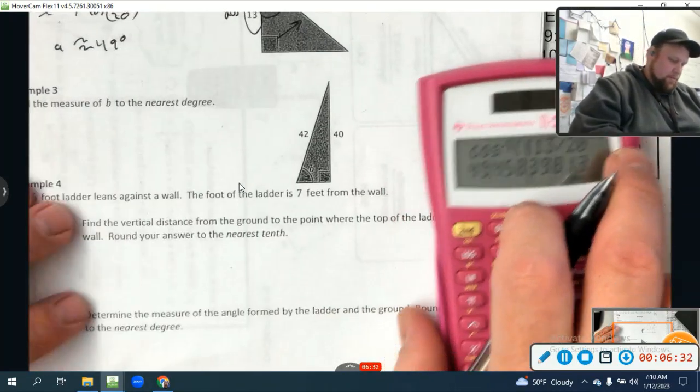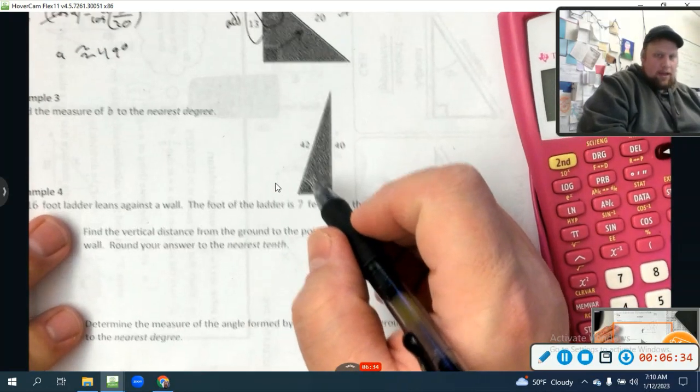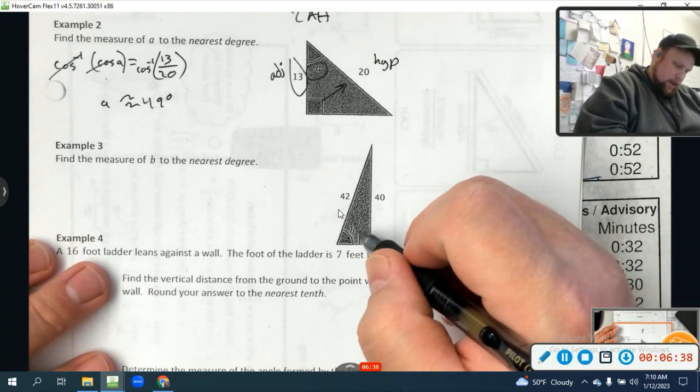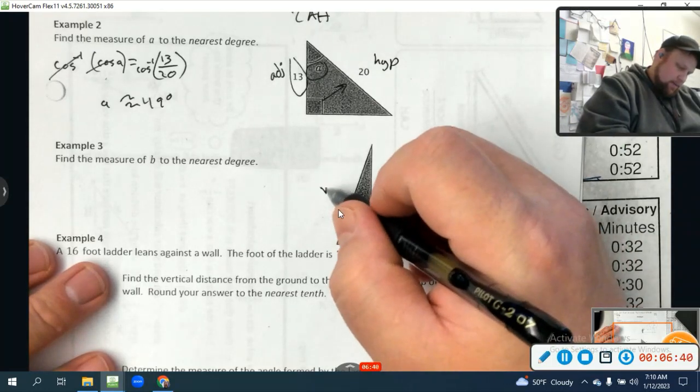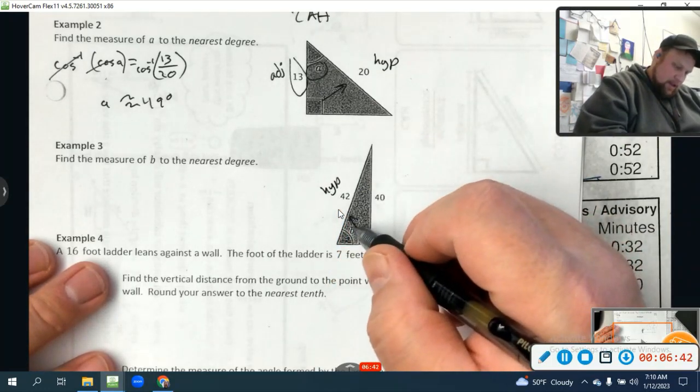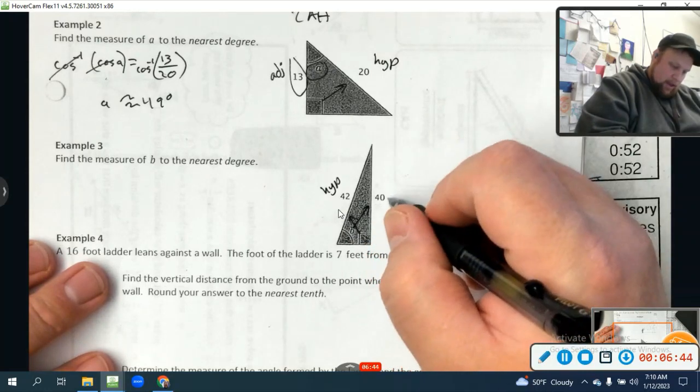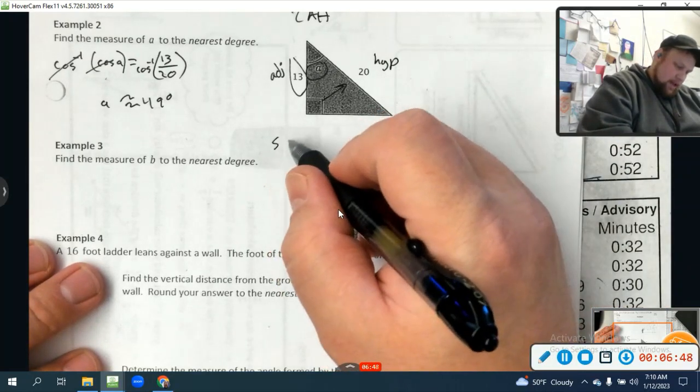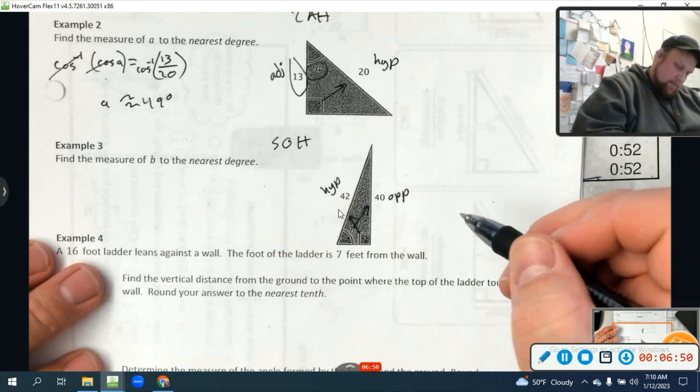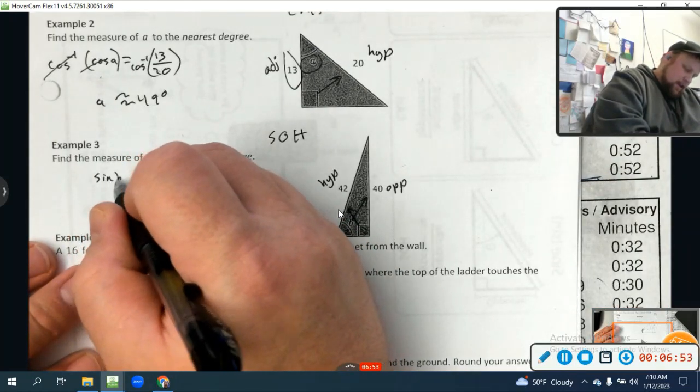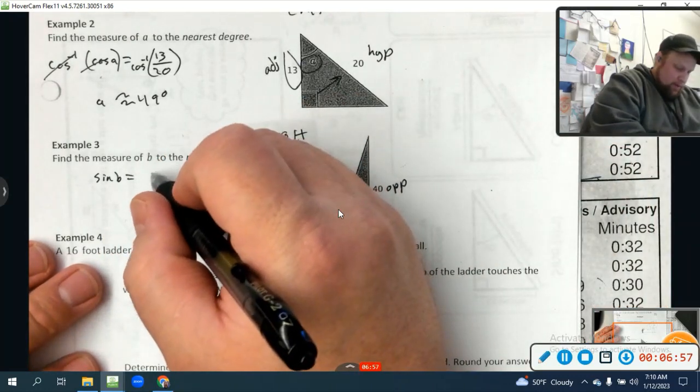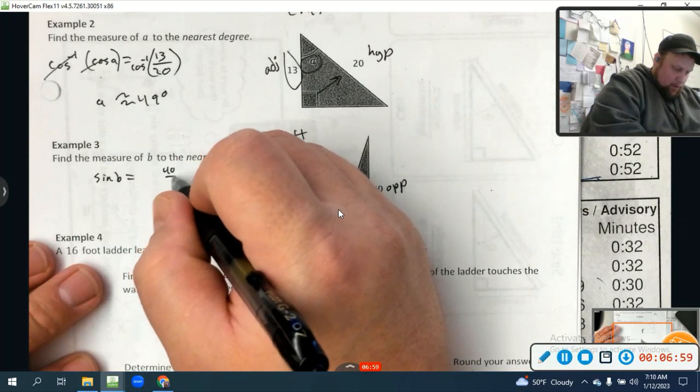Let's do one more. Okay. So we'll do an example with sine right here. So again, across from the 90 is always the hypotenuse. And this time, across from the angle B is going to be our opposite. So sine is the so, the opposite over hypotenuse. So we know that the sine of B is equal to opposite of 40 over the hypotenuse of 42.